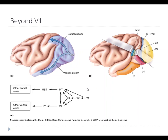There are a lot of different circuits here, way more complicated than we can get into. But there are basically two streams. There's the dorsal stream, which is a projection from V1 to V2 and areas like the middle temporal area (MT) and then the middle superior temporal area. And there's a ventral stream, which includes V1, V2, V3, and then a projection from V3 to V4, and from V4 to the inferior temporal lobe.